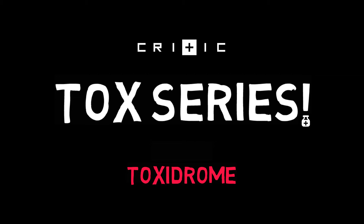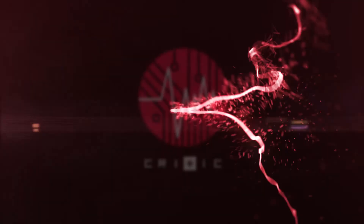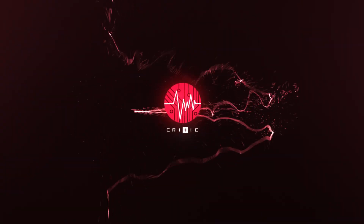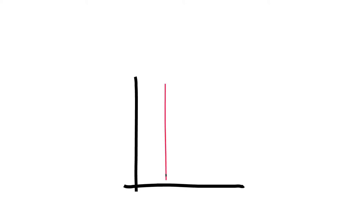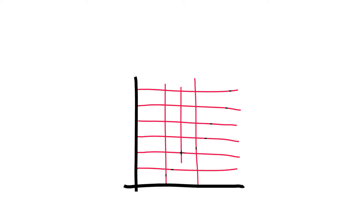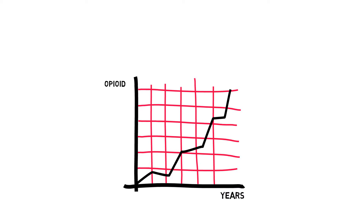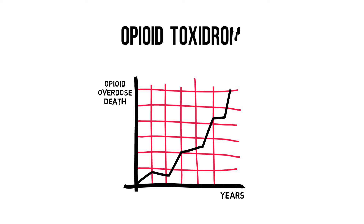This video covers the opioid toxidrome. With the emerging opioid crisis in the US, recognizing the opioid toxidrome is extremely important. In the opioid toxidrome, all vitals are downregulated and respiratory depression is common. It has a lot of similarities with the sedative-hypnotic toxidrome discussed next, and there is a really effective antidote available, so let's go through it.